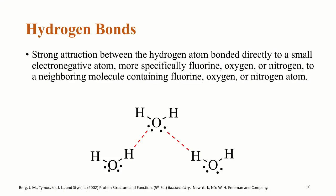The next non-covalent interactions we'll talk about are hydrogen bonds. Hydrogen bonds are strong attractions between the hydrogen atom bonded directly to a small electronegative atom — specifically fluorine, oxygen, or nitrogen — to a neighboring molecule containing a fluorine, oxygen, or nitrogen atom. The large electronegativity difference causes the hydrogen atom to have a fairly large partial positive charge, while the fluorine, oxygen, or nitrogen atoms have a fairly large partial negative charge. In the representation shown, one water molecule is forming hydrogen bonds with two additional molecules of water.